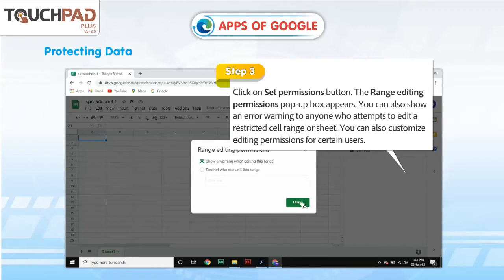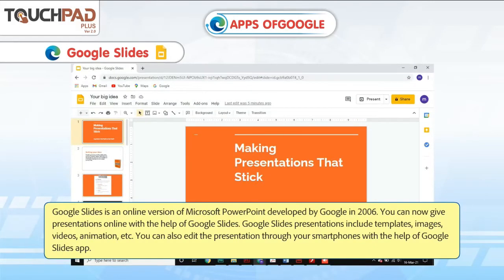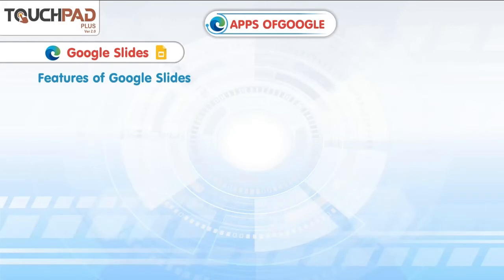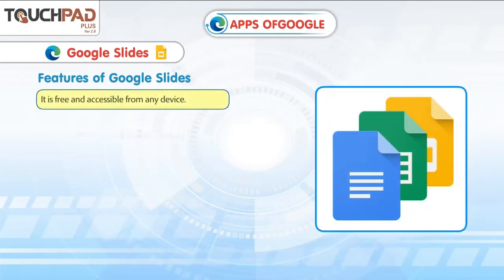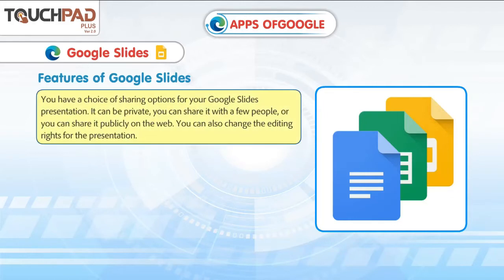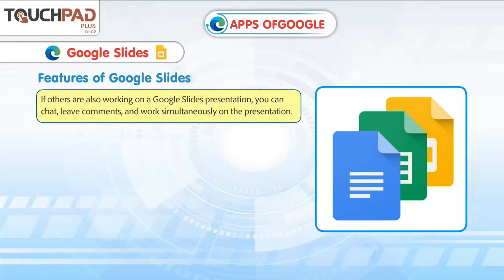Google Slides is an online version of Microsoft PowerPoint, developed by Google in 2006. You can give presentations online with the help of Google Slides. Google Slides presentations include templates, images, videos, animation, etc. You can also edit the presentation through your smartphone with the Google Slides app. Features of Google Slides: it is free and accessible from any device. You have a choice of sharing options — it can be private, shared with a few people, or shared publicly on the web. You can change the editing rights for the presentation. If others are also working on a Google Slides presentation, you can chat, leave comments or work simultaneously on the presentation.